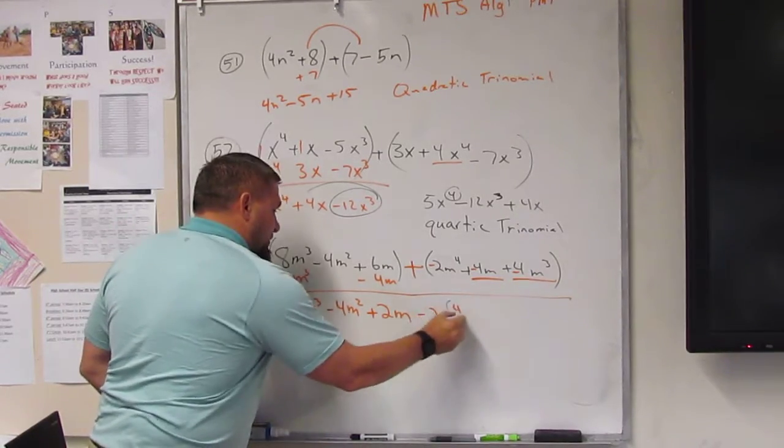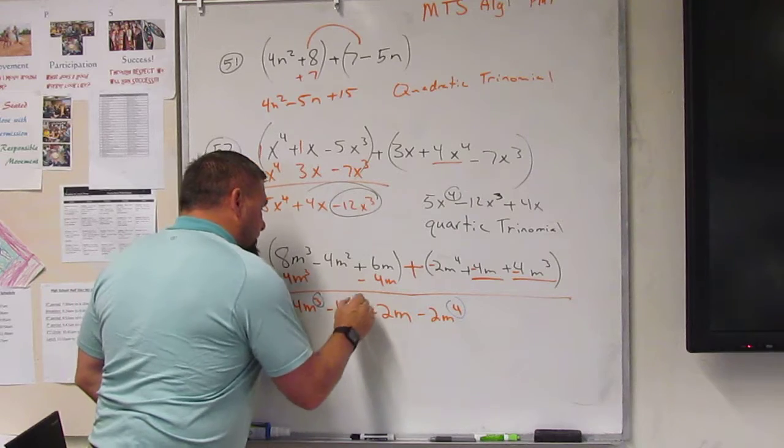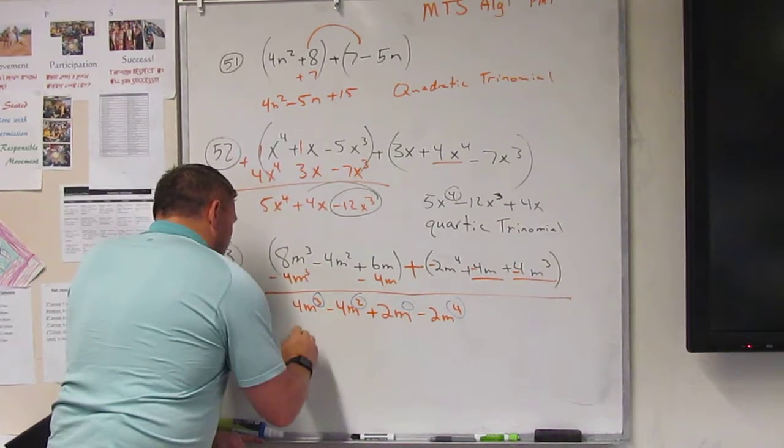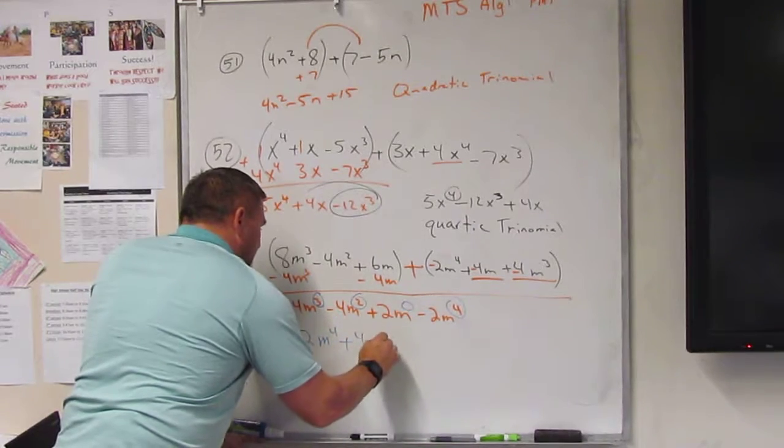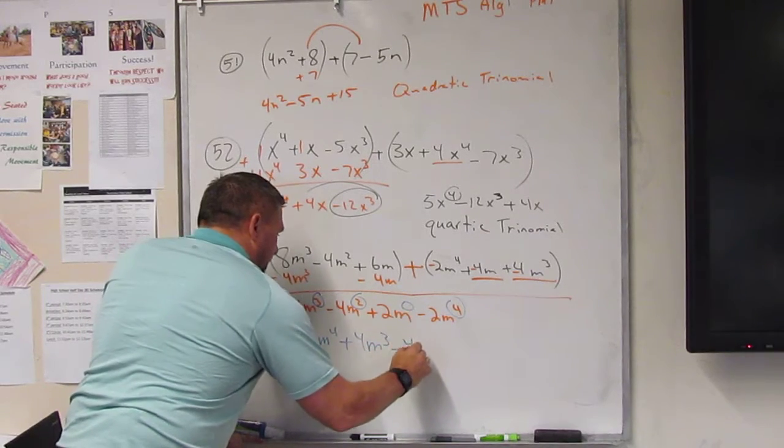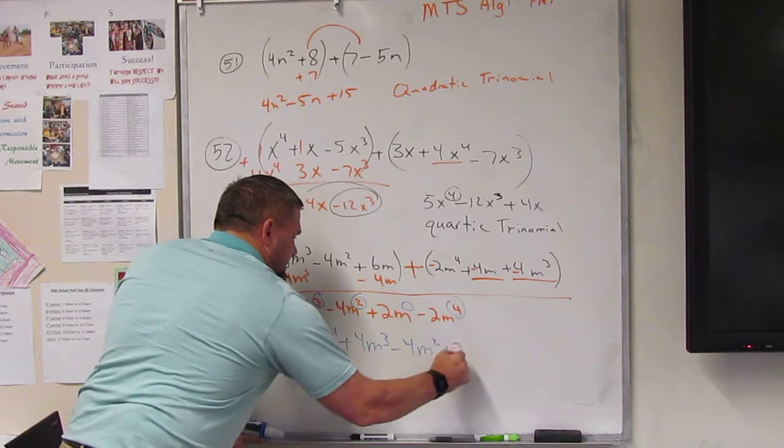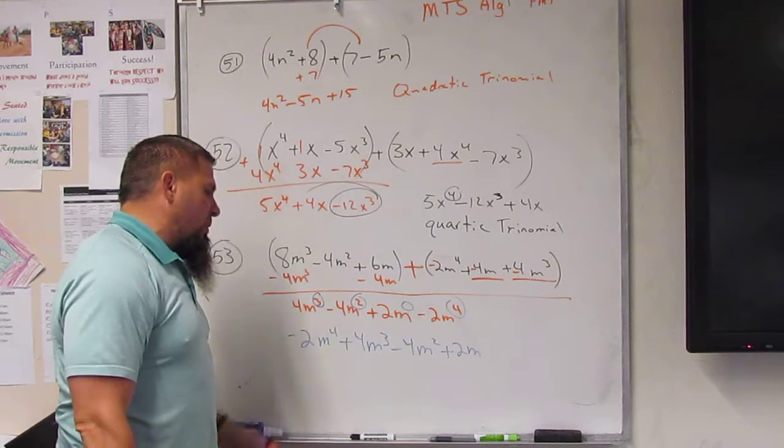The 4 goes first, then the 3, then the 2, then the 1. So it's going to go minus 2m to the 4th, plus 4m to the 3rd, minus 4m, 1 squared, plus 2m. Now, what do we call that?